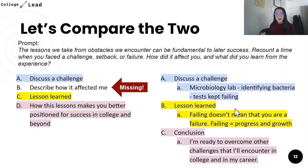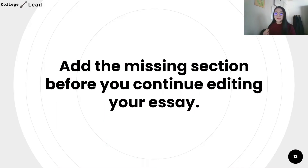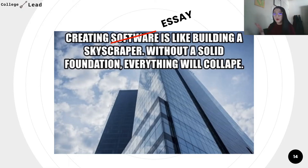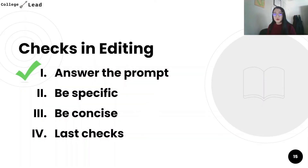This is just an illustrative example to give you an idea of what I mean by trying a reverse outline. But you can see how this method lets you double-check that all the required content is in your essay — and this is the key step. Our theoretical student will go back and add the missing section before continuing. You want to set a solid foundation in your essay. Creating an essay is like building a skyscraper: without a solid foundation, everything will collapse. That's why answering the prompt and checking content is the first step in editing your essay.